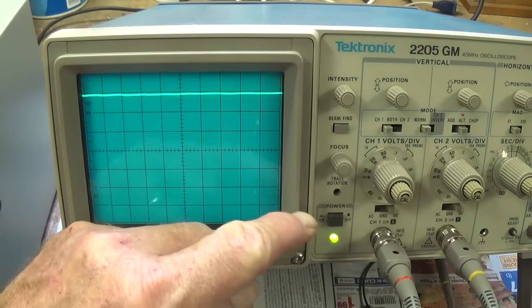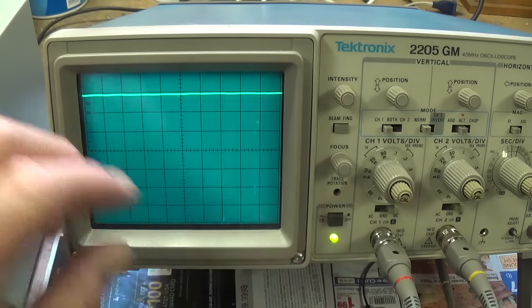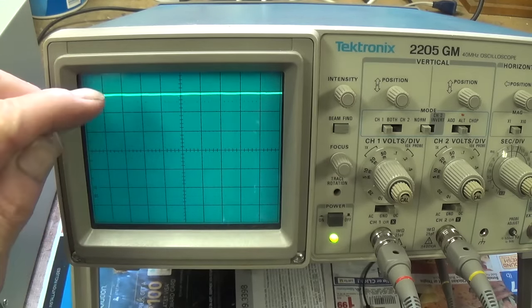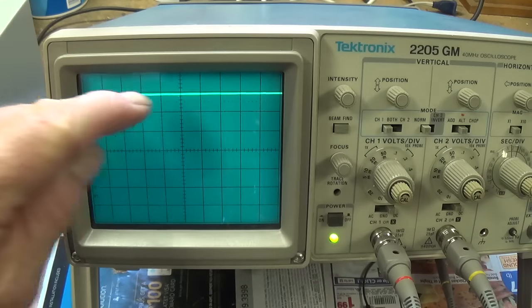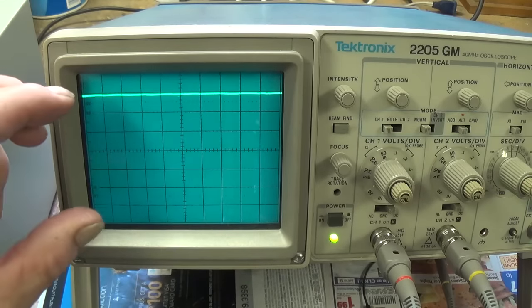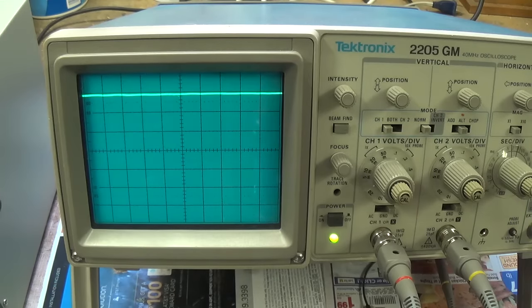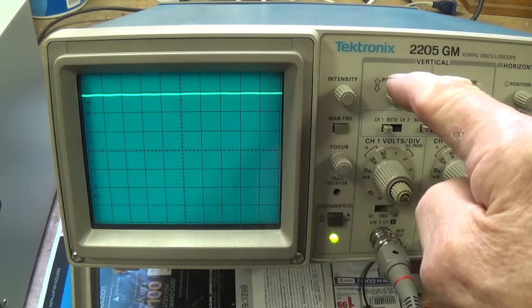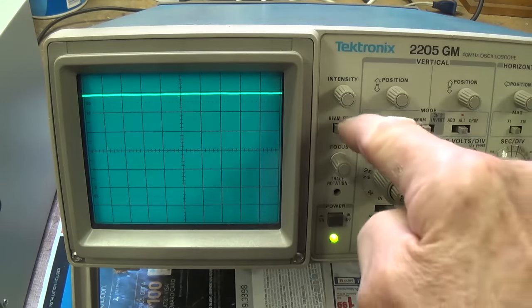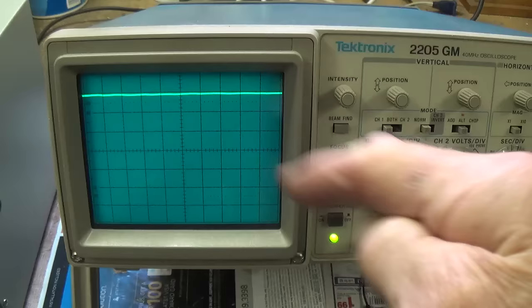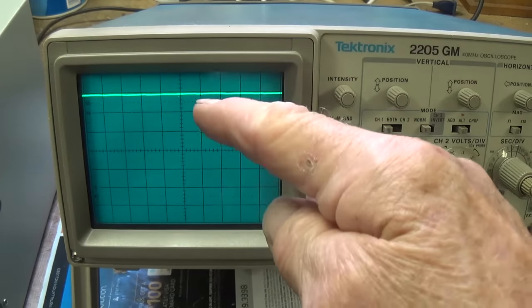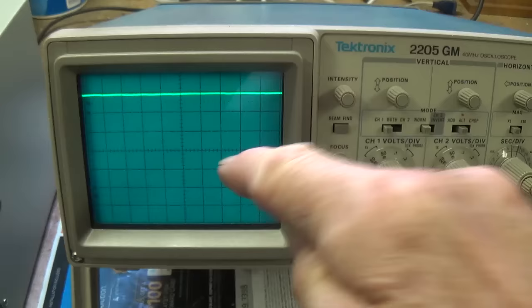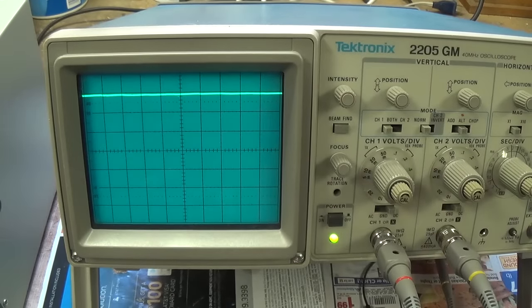Now that the scope is on and is warmed up, hopefully you're going to see a horizontal line across the screen. If you don't see it, don't worry. I'll show you how to find it and how to put it there. Now let's learn these four controls here, one, two, three, four, as they will help us get this line where we want it and make it appropriate for our viewing.